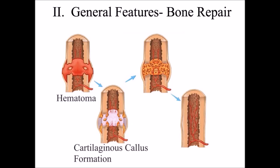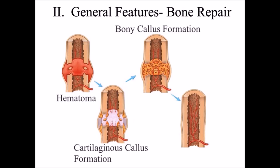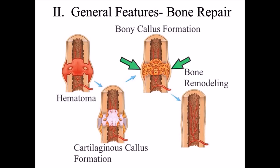The third stage is bony callus formation — bone replaces the cartilage, and blood vessels reattach. The final stage of bone repair is remodeling: you have a large callus, or bulge, that sticks out, and remodeling is the reabsorption of that excess callus. The destruction of that excess bone is carried out by osteoclasts, which reabsorb and destroy the bone to reshape it back to normal.